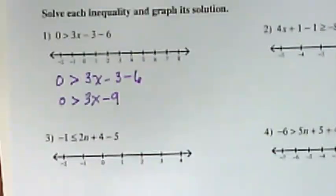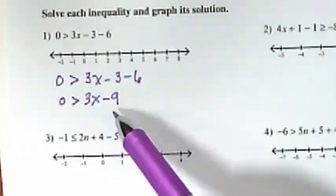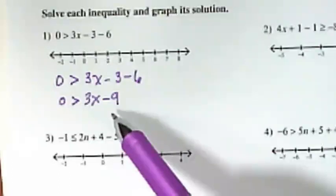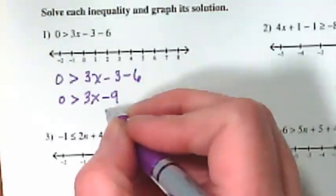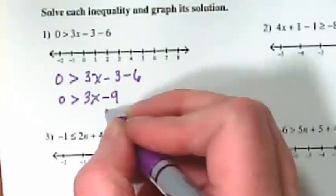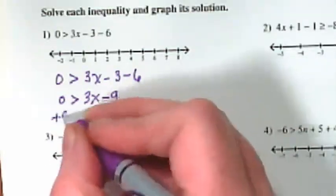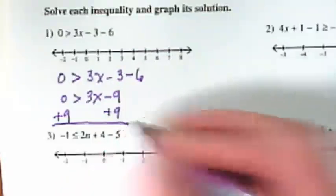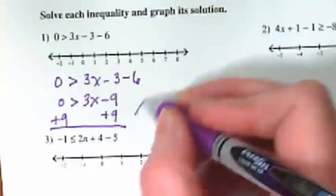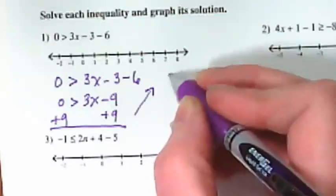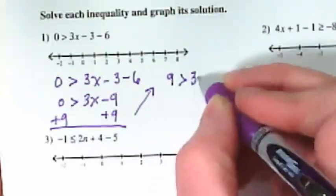Step five, eliminate the constant term, the number that's by itself from the side with the variable using addition or subtraction. Negative nine is our constant. It doesn't have a variable but it's on the side of the inequality with the variable so we are going to eliminate it by zeroing it out and adding it to the other side. I am running out of room here so I'm going to write the solution up over here and I end up with 9 is greater than 3x.